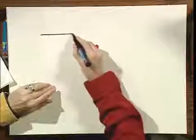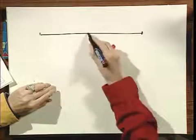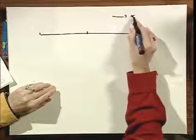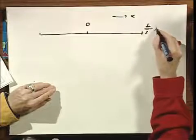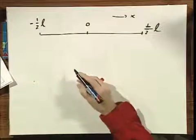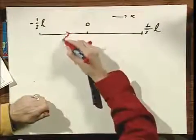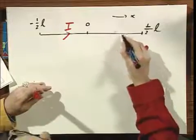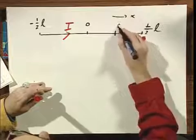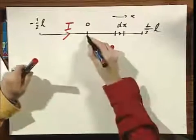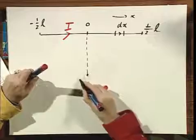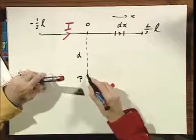So I'm going to set it up for you in general terms and then you work out the details with the particular geometry. If I have here a wire which has a finite length L, I call this the X direction. Here is zero, here is one half L, and here is minus one half L. And there is a current flowing in this direction I. And I consider here a small element DX. Think of that as being dL in our Biot-Savart calculation. And I would like to know what here at point P, at a distance D from the wire, the magnetic field is.